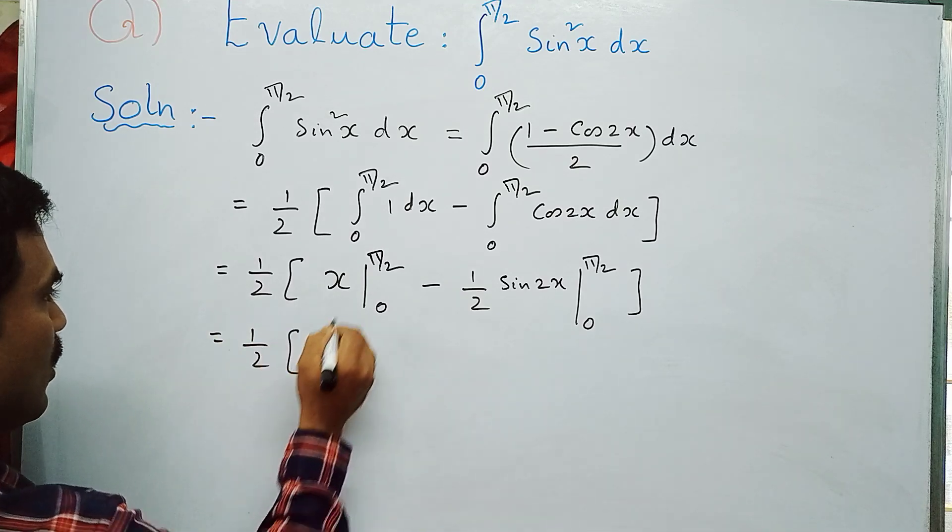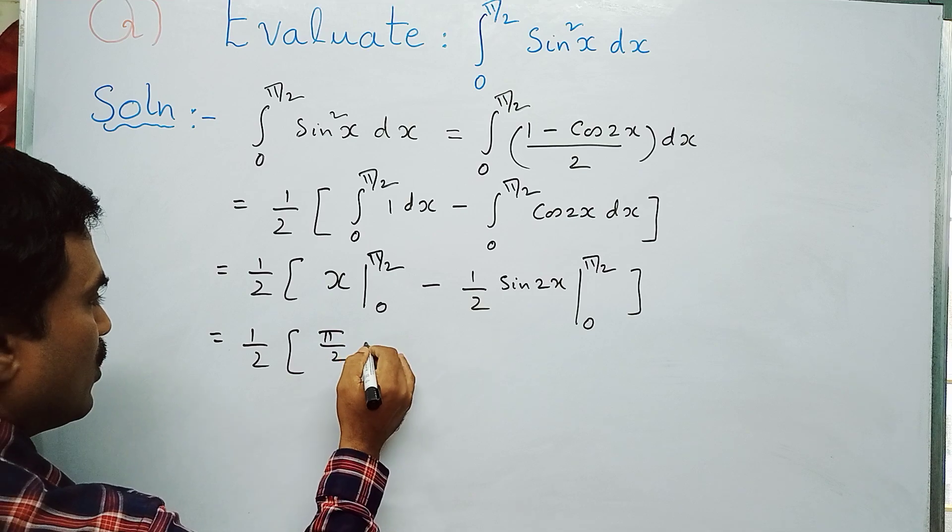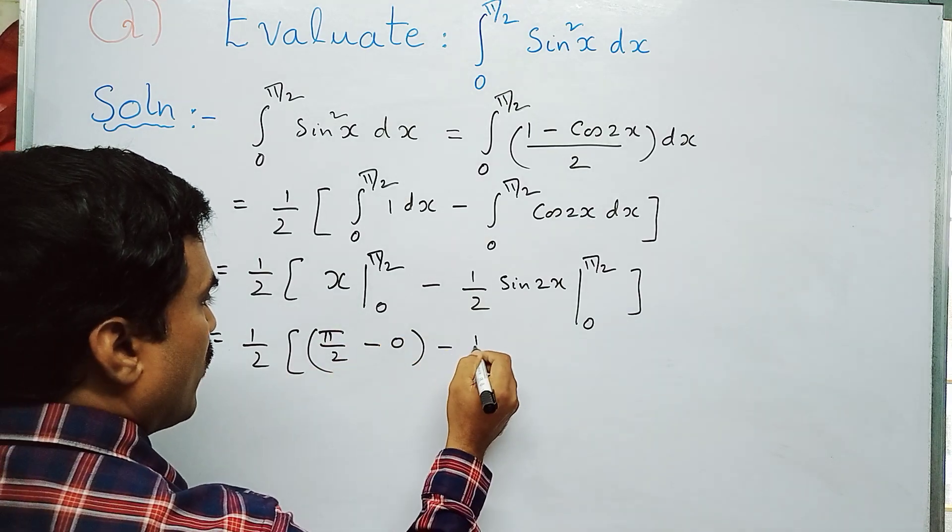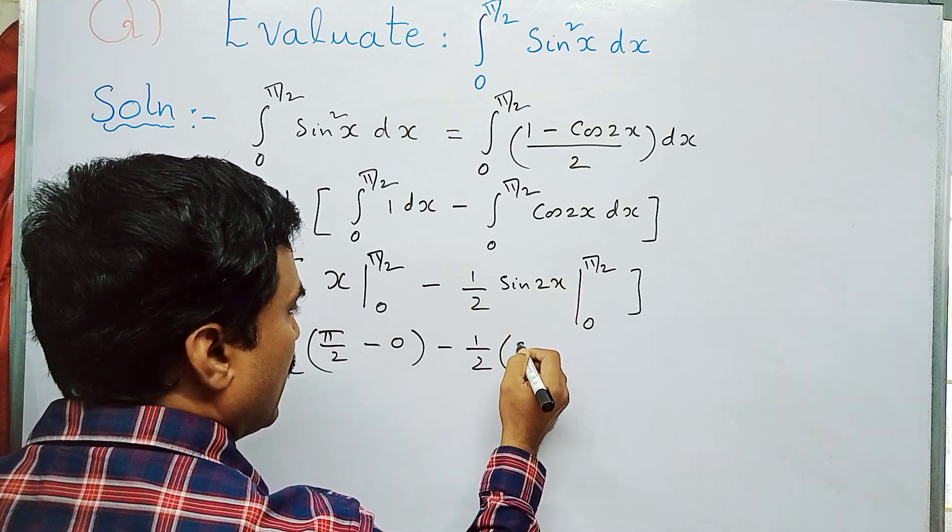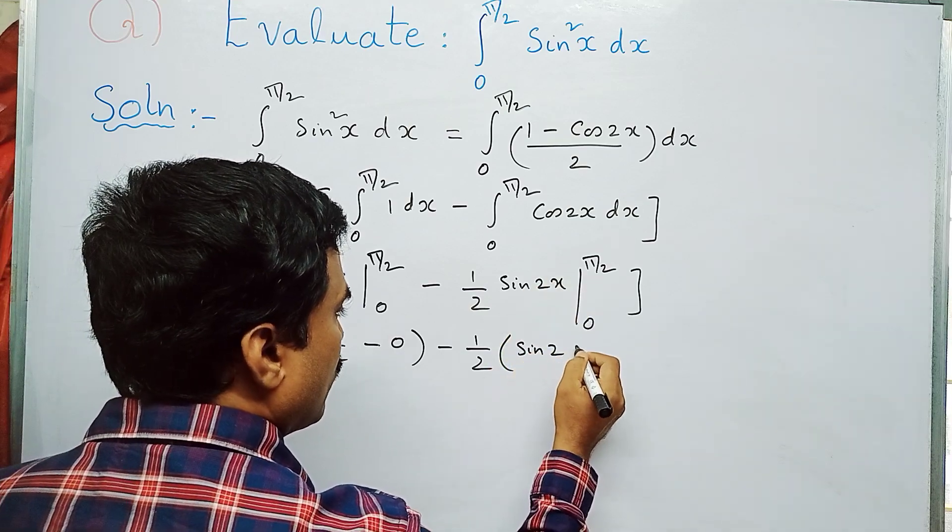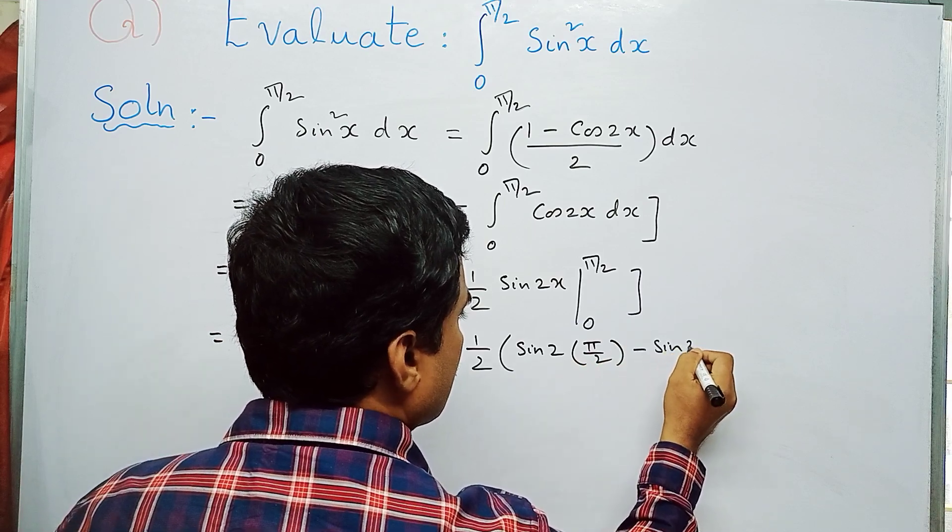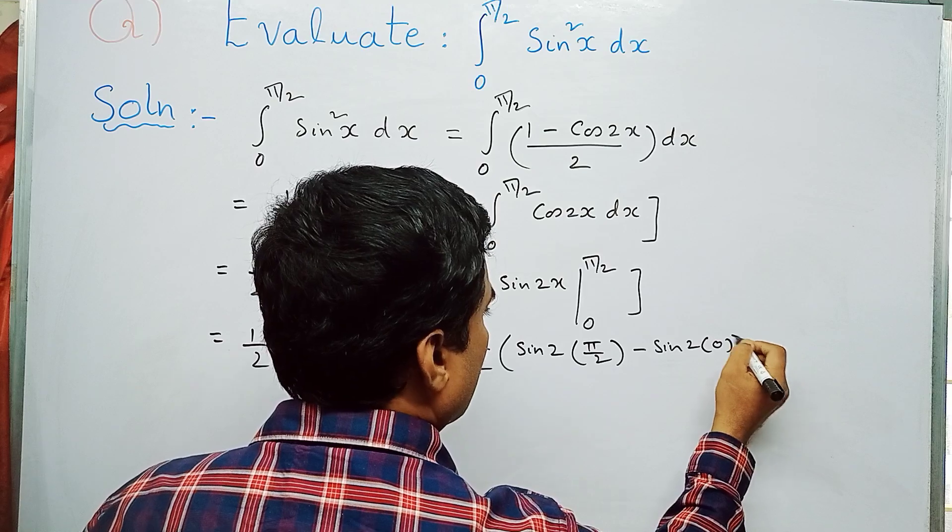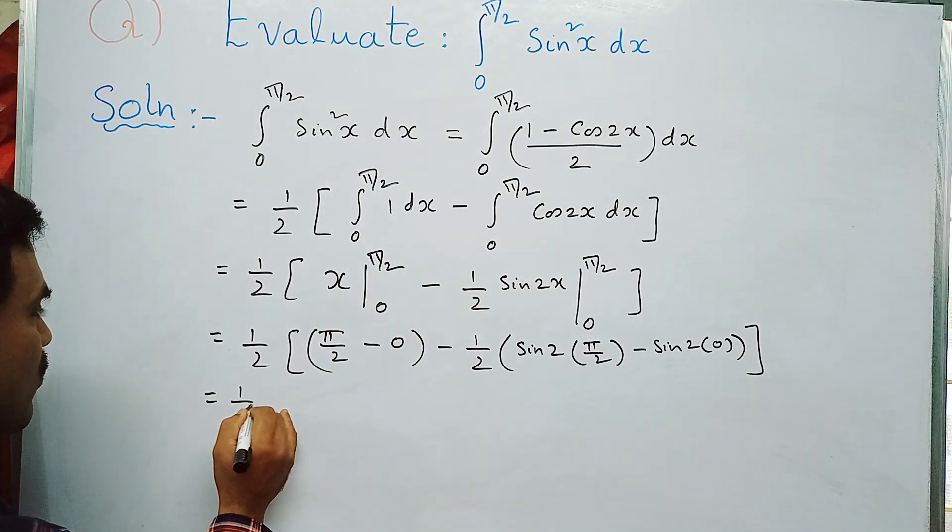For the upper limit: sin(2·π/2) equals sinπ. For the lower limit: sin(2·0) equals sin0. This gives us: 1/2 times [(π/2 - 0) minus 1/2(sinπ - sin0)].